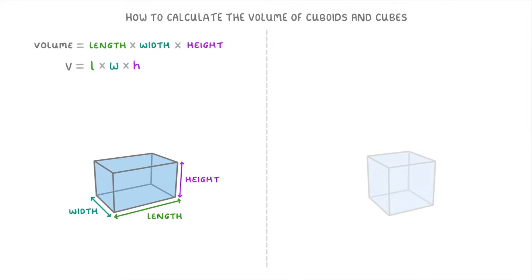So if our cuboid had a length of 8cm, a width of 6cm, and a height of 5cm, then to find the volume we'd just do the length of 8 multiplied by the width of 6 times the height of 5, which gives us 240cm³.